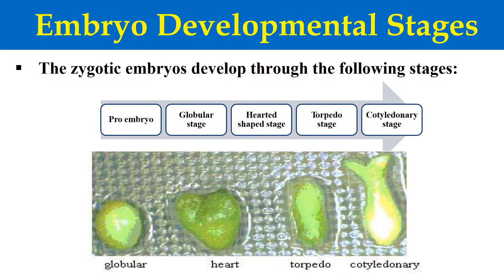During development, what are the different stages a plant embryo passes through? They include: first, the proembryo, which changes into the globular stage — as shown in the diagram. Then from the globular stage it changes to the heart-shaped stage, then to the torpedo stage, and finally into the cotyledonary stage. These are the stages of embryo development.